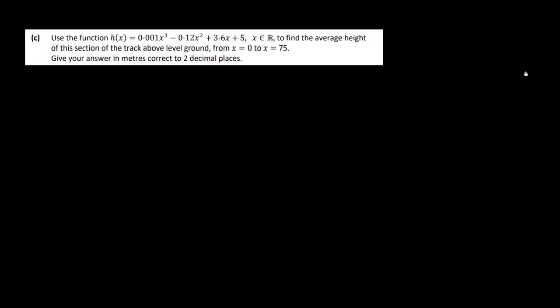Okay, so in part C here, we've got to use the function h(x) to find the average height of this section of track above ground level from x equal to 0 to x equal to 75. Give your answer in meters correct to two decimal places. So this is really just the average value function. So this is a bit of integration here. So we want to do 1 over our limit subtracted, so it's going to be 75 minus 0. And then we've got to find the integral from 0 to 75 of our function.